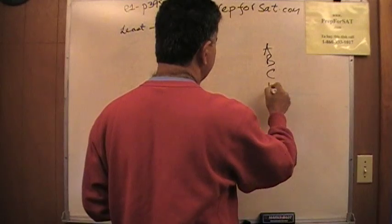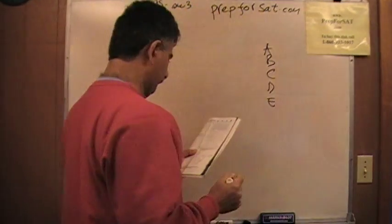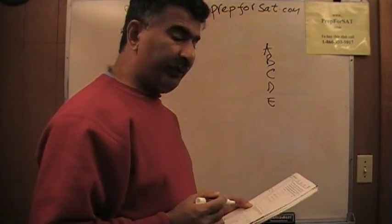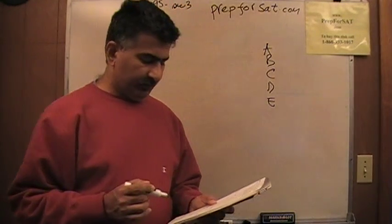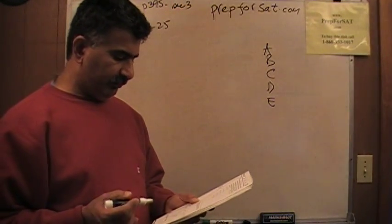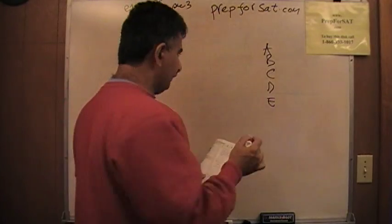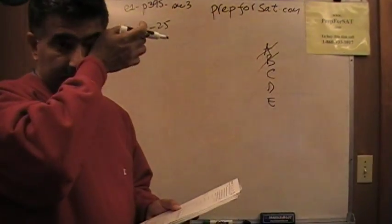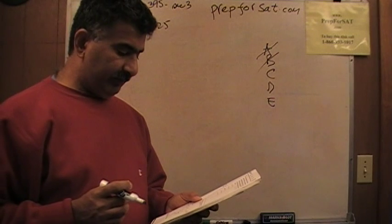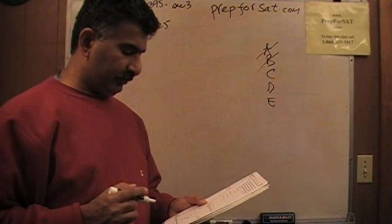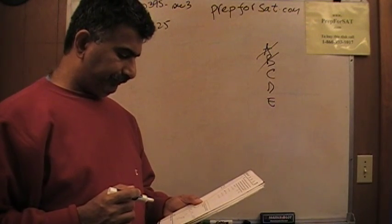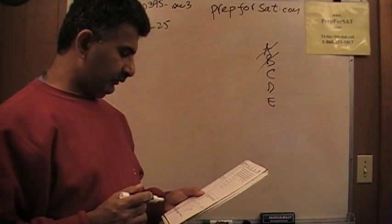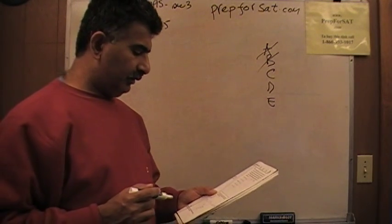Let's write down the answer choices: A, B, C, D, E. An average person sees 25 in the question and 26 in the question — those are not going to be the right answers. Just because the sum of the numbers is 26 does not mean there are going to be 26 integers. Those are sucker answers. The answer is going to be either 50, 51, or 52.